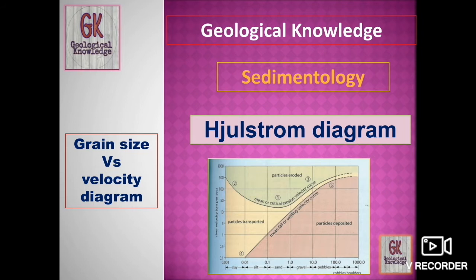The Hjulström diagram is essentially a grain size versus velocity diagram. It shows the relationship between the size of the sediment and the velocity required to erode, lift, transport, or deposit that sediment. It deals with the relationship between sediment size and the velocity required for erosion, transportation, and deposition.